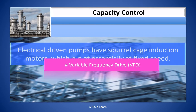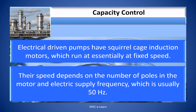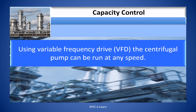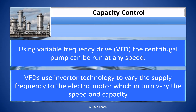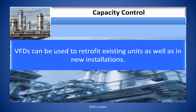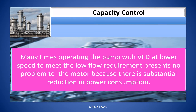Variable frequency drive (VFD). Electrically driven pumps have squirrel cage induction motors which run essentially at fixed speed. Their speed depends on the number of poles in the motor and electricity supply frequency, which is usually 50 Hz. Using a variable frequency drive, centrifugal pumps can be run at any speed. VFDs use inverter technology to vary the supply frequency to the electric motor, which in turn varies the speed and capacity. VFDs can be used to retrofit existing units as well as in new installations. For retrofit applications, one has to evaluate the existing motor. Operating the pump with a VFD at lower speed to meet low flow requirements presents no problem to the motor because there is substantial reduction in power consumption.